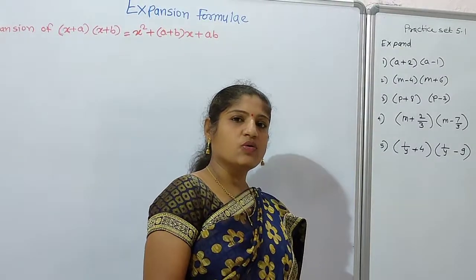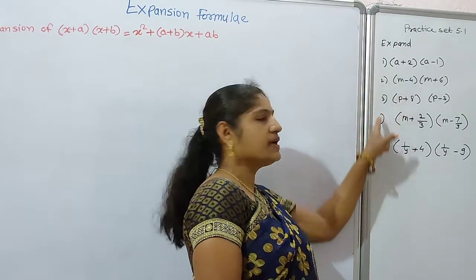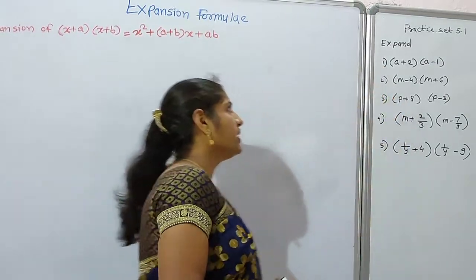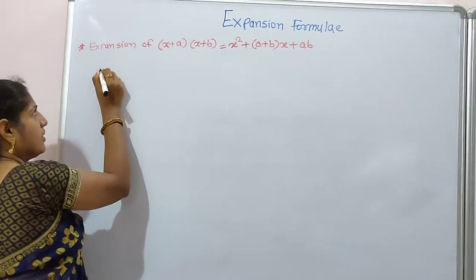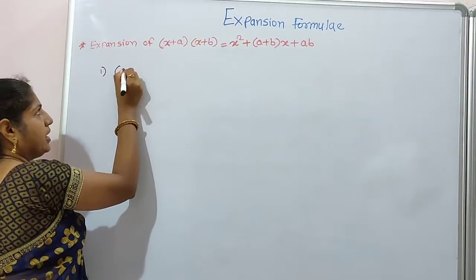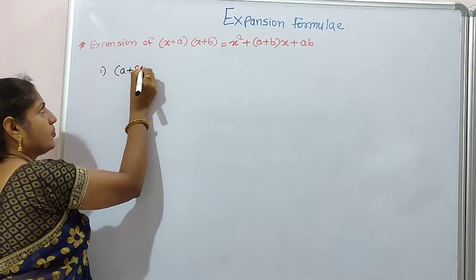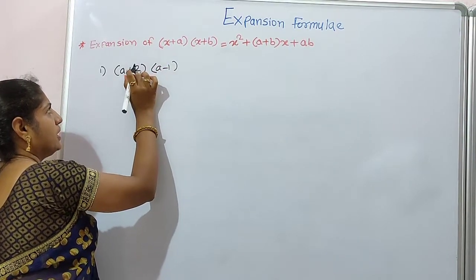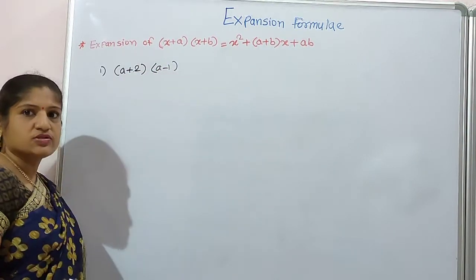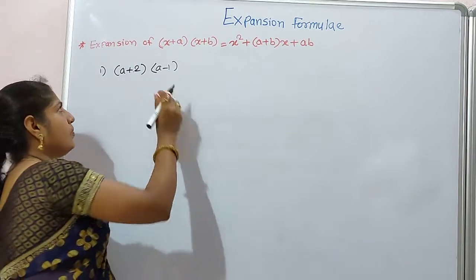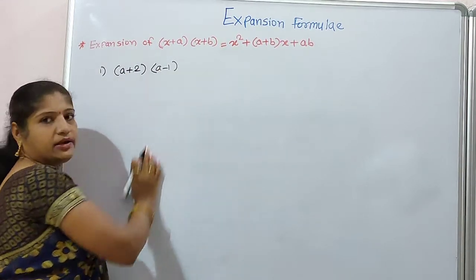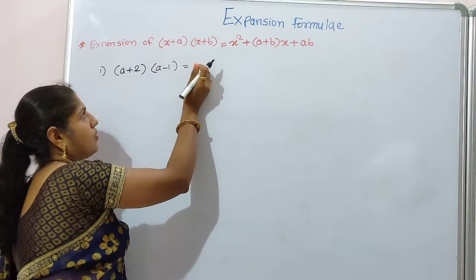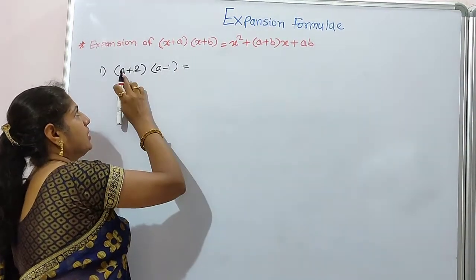Now we will solve some examples using this formula. Example 1: a plus 2 multiplied by a minus 1. Here, a is the like term in both brackets, and 2 and minus 1 are the unlike terms.